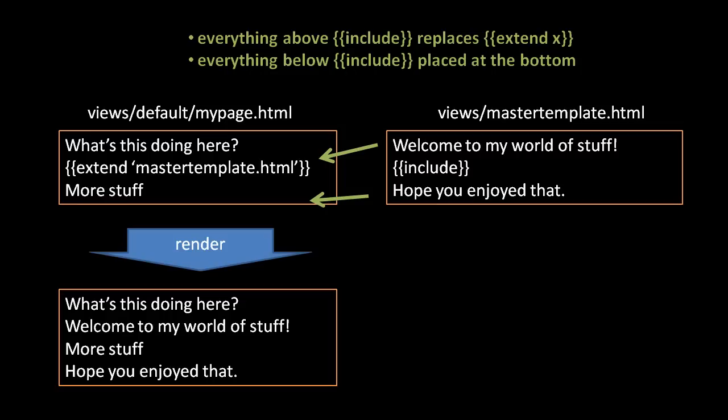The purpose of allowing stuff to go above the extend directive — and thereby remain at the top of the rendered output — is mainly not for actual text content but rather for lines of Python code which define things of certain names. That way, we can have a master template that makes use of variable names which it expects to be provided by the specific page extending the template. For example, if the template uses a function named foo which it doesn't define, it's expecting the extending view to define foo above the extend directive.